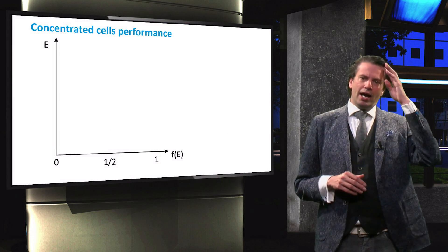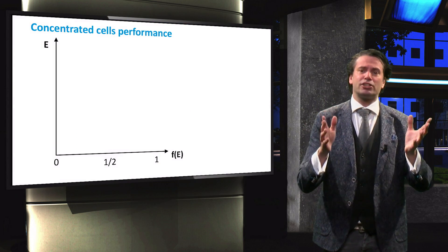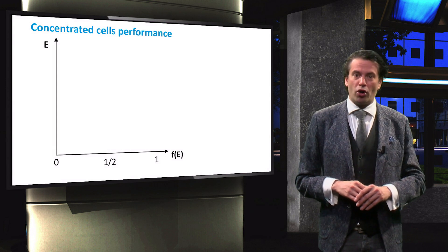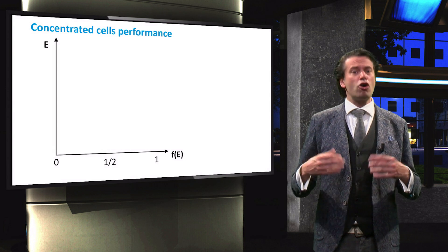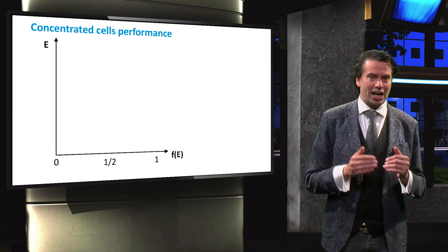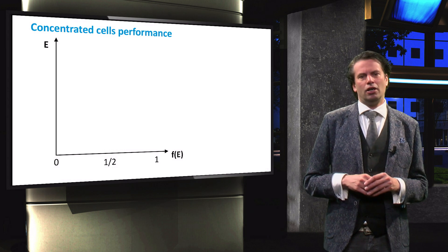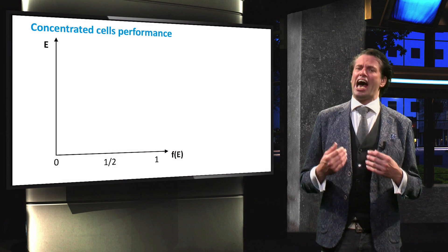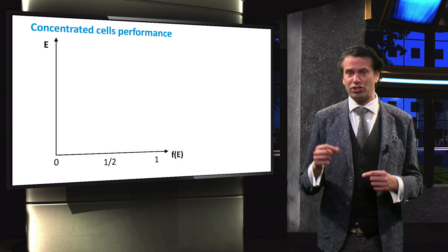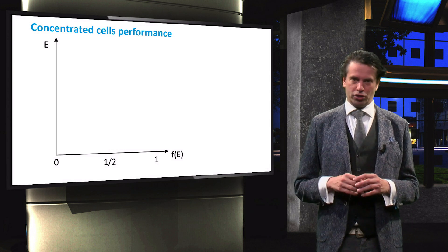The effect of the temperature on the energy level of valence electrons is described by the Fermi-Dirac distribution function. As explained in the PV1X course, the Fermi-Dirac distribution function F(E) describes the probability that a valence electron occupies a state at a certain energy level E. The Fermi-Dirac distribution function therefore gives insight into the energy level of electrons in a semiconductor at a certain temperature.